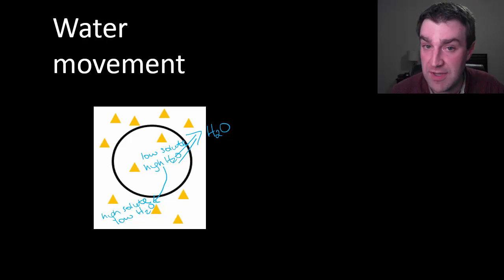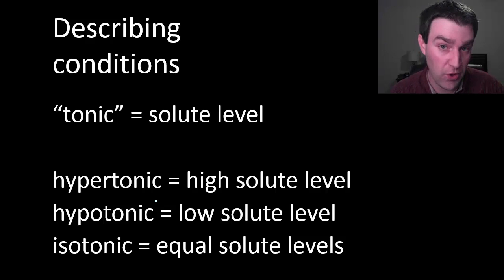Something else we'll want you to be able to do is to use words to draw these pictures and then predict water movement. You'll see that there are three words: hypertonic, hypotonic, and isotonic. All of these words are referring to the solute level in a particular area.